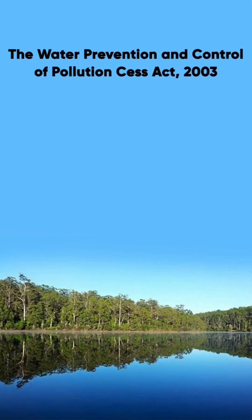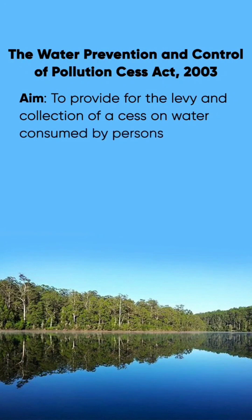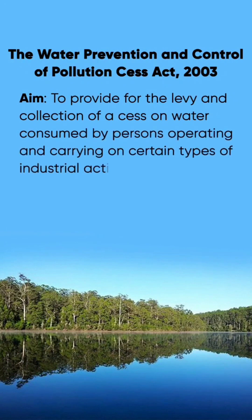The Water Prevention and Control of Pollution Cess Act, 2003. Aim: To provide for the levy and collection of a cess on water consumed by persons operating and carrying on certain types of industrial activities.